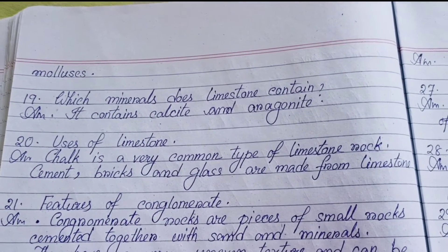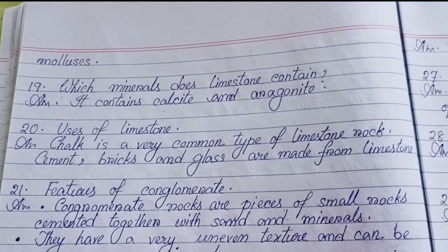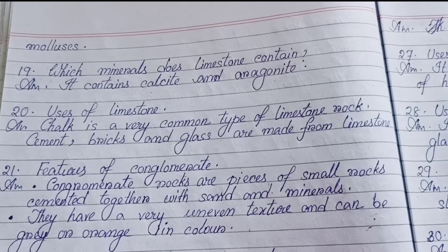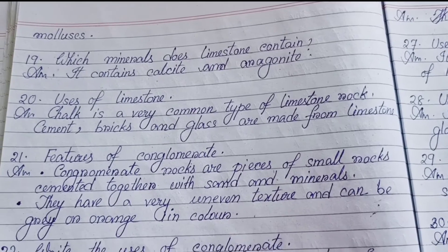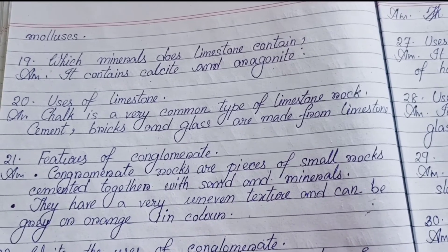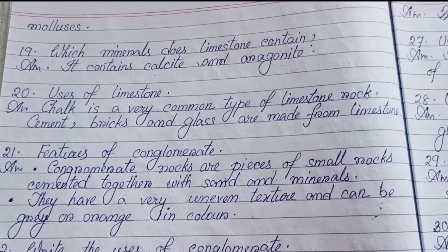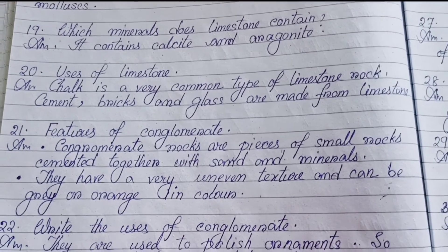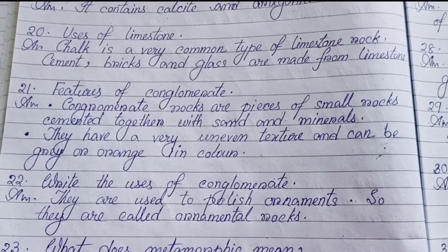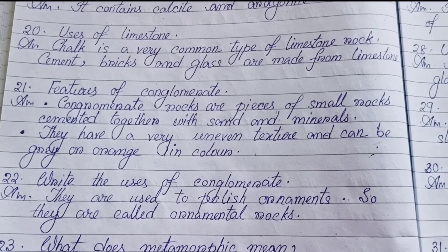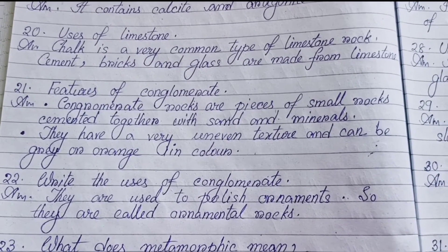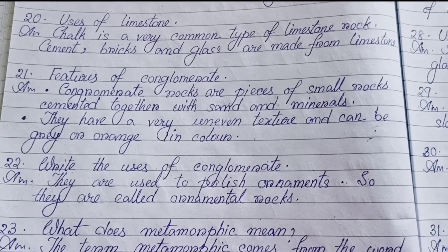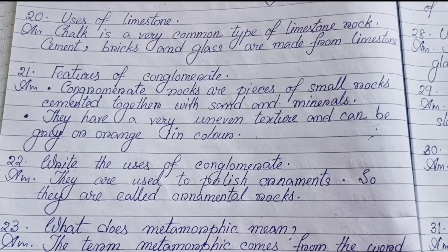Number nineteen: Which minerals does limestone contain? It contains calcite and aragonite. Number twenty: Uses of limestone — Chalk is a very common type of limestone rock. Cement, bricks, and glass are made from limestone.